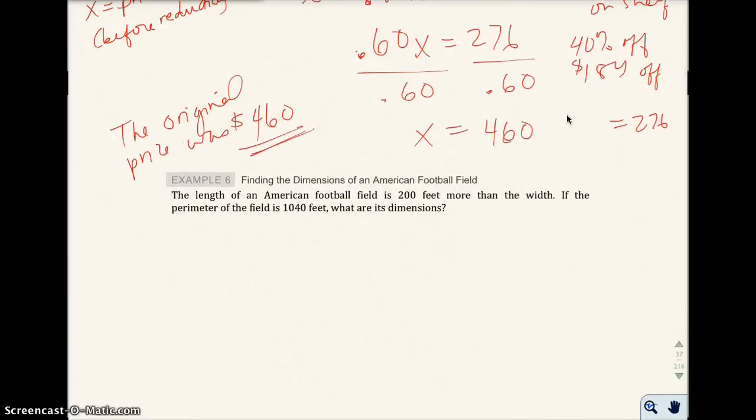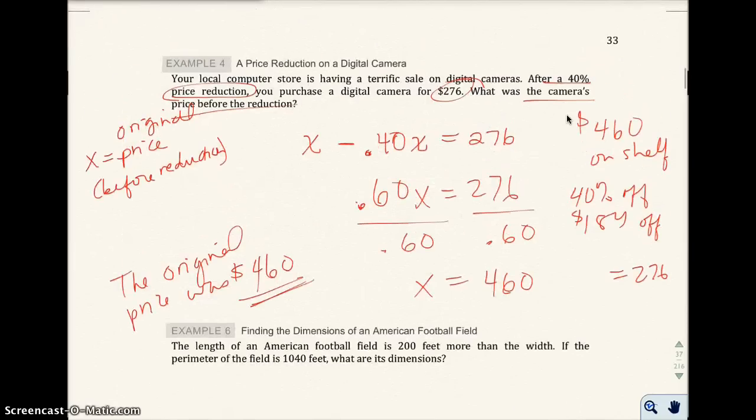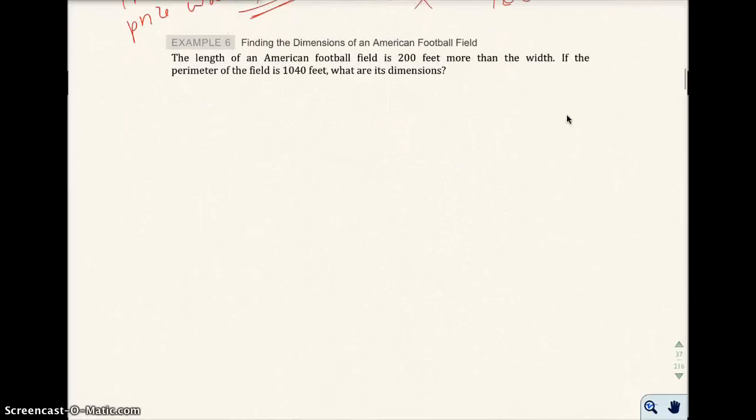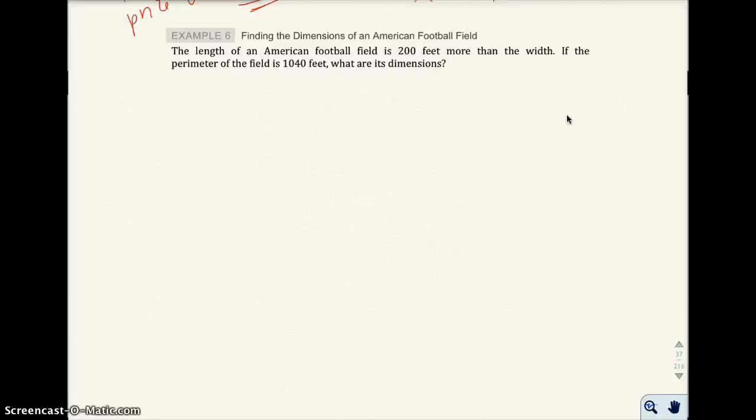Okay, we just finished the example on the camera. So let's go ahead and start example six, and this is talking about the dimensions of an American football field. The length of an American football field is 200 feet more than the width. If the perimeter of the field is 1,040 feet, what are the dimensions?